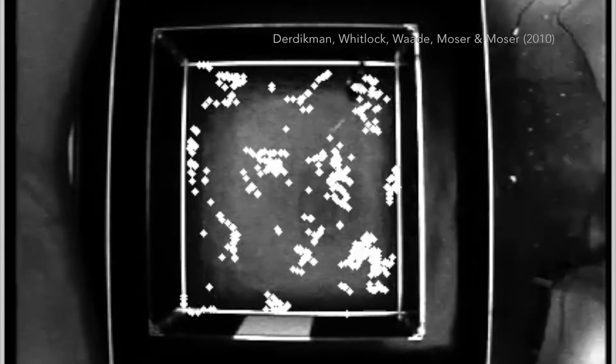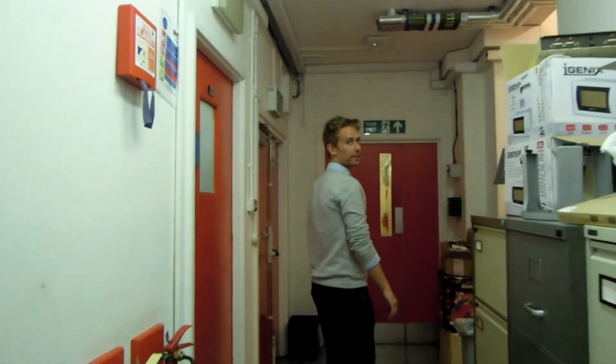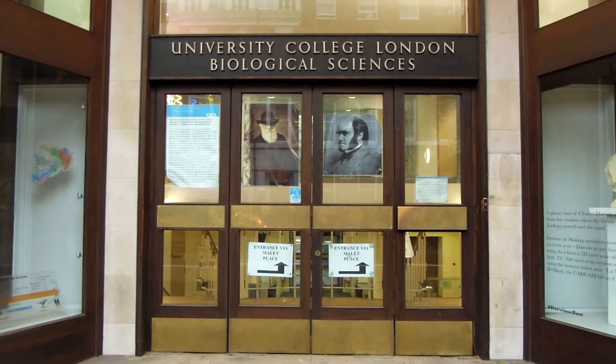Recently, research has shown how these patterns can change to help the brain make better mental maps of space. I went to see researcher Francis Carpenter from the UCL Cell Biology Lab to find out more about this research.